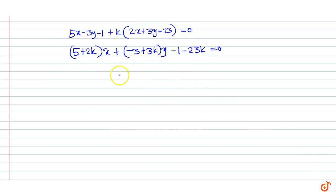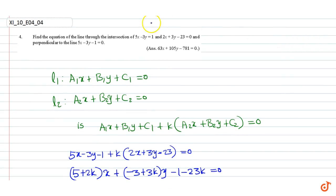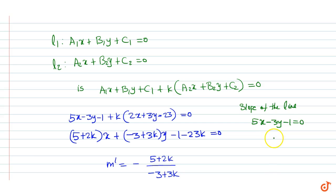The slope of this line is m dash equal to minus (5 plus 2k) divided by (minus 3 plus 3k). Now, the slope of the line 5x minus 3y minus 1 equal to 0 is 5 by 3, so m is equal to 5 by 3.